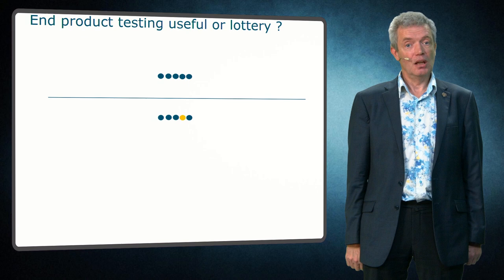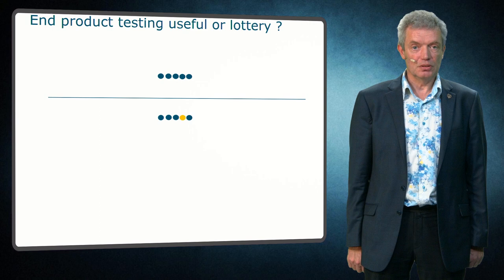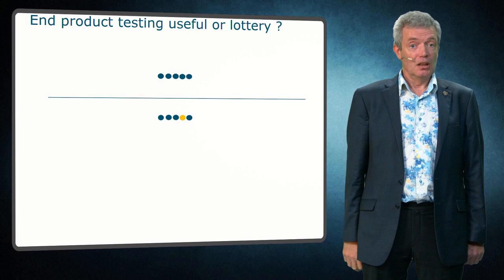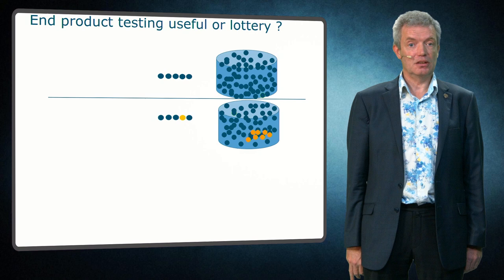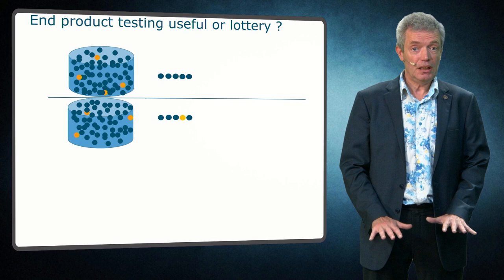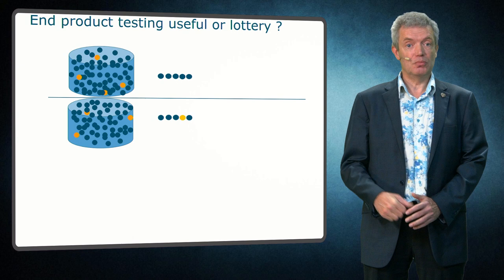Testing a certain number of samples with a low level of contamination can be compared to a lottery. Here you can see two results: one time with five negatives and one time five samples with one positive. This gives the illusion that the first batch is free of the pathogen and the second is contaminated. However, since sampling is a stochastic process, it could also be another situation — it could be that in both cases there is a very low and equal level of contamination, and in the second case you got lucky and hit a positive sample, while in the first batch you didn't.